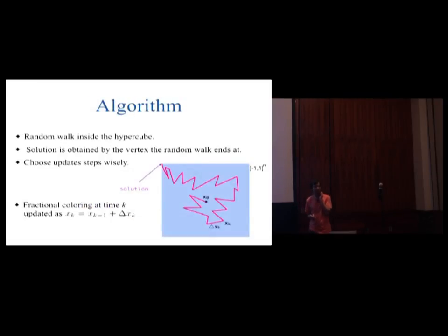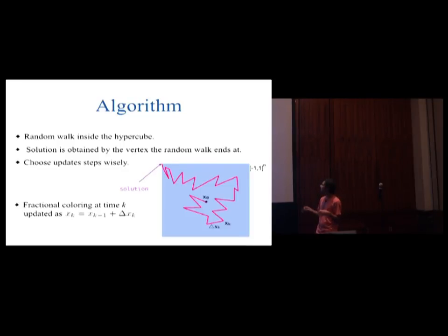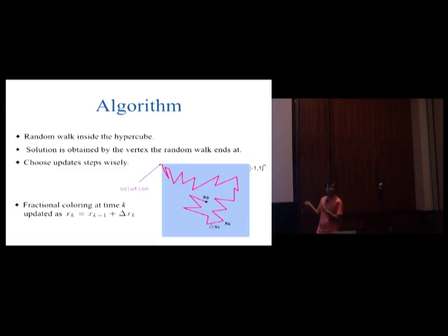Our algorithm performs a random walk inside the hypercube, and at each time step we maintain a fractional colouring of all the points. A fractional colouring of a point is a value between minus 1 and 1, and the position of this random walk gives you the fractional colouring of the points. Initially the fractional colouring is set to 0 and updated according to the steps taken by the random walk. When the algorithm stops and you land at a vertex of the hypercube — an all minus 1 or plus 1 point — you get a full colouring of all the points, and you take care never to step outside of the hypercube.